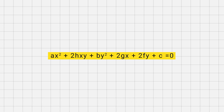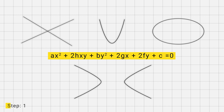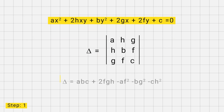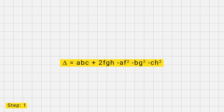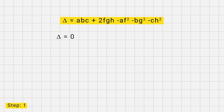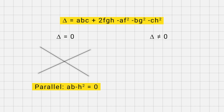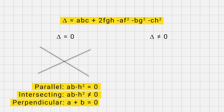The general equation of a conic can represent a parabola, hyperbola, ellipse, or two lines. Our first step is to find delta, which is equal to the determinant of the coefficient matrix. If delta equal to 0, then the general equation of conic represents two lines, which can be parallel, intersecting, or perpendicular. For parallel lines, ab minus h squared equal to 0; for intersecting lines, ab minus h squared not equal to 0; and for perpendicular lines, a plus b equal to 0.